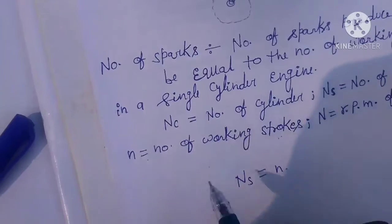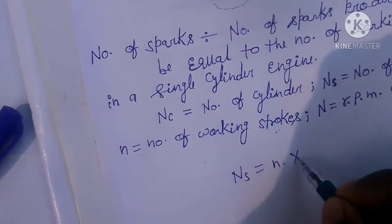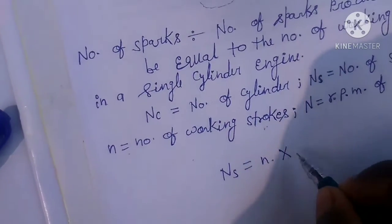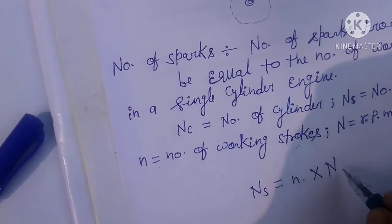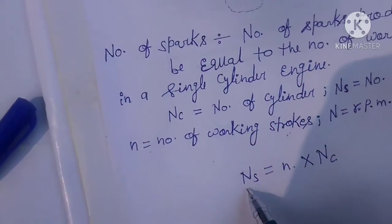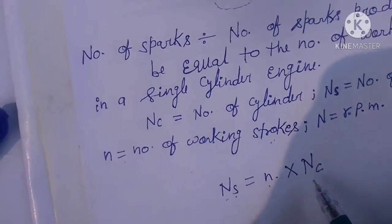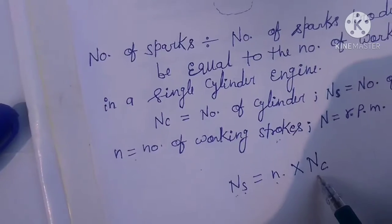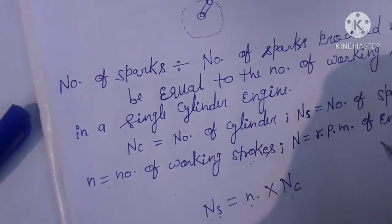The formula is: ns equals number of sparks equals number of working strokes multiplied by number of cylinders. So, number of sparks equals working strokes multiplied by number of cylinders.